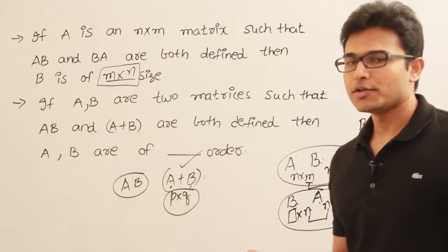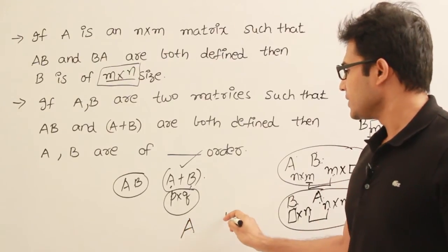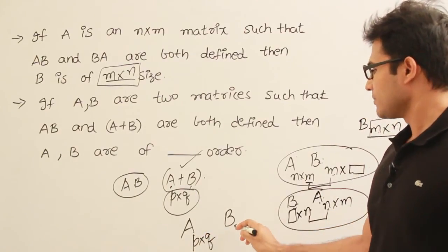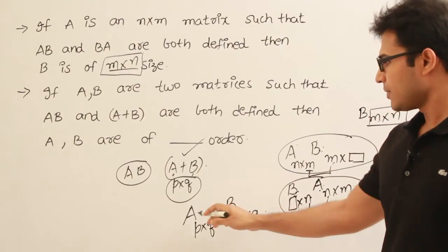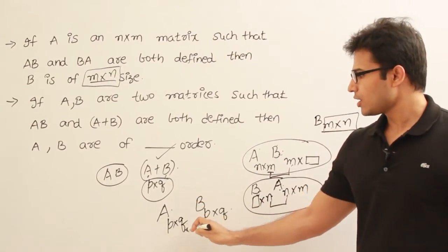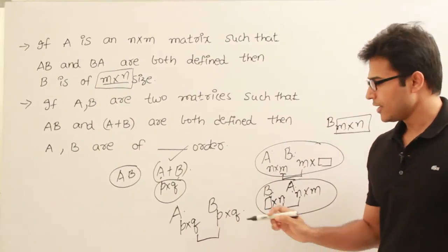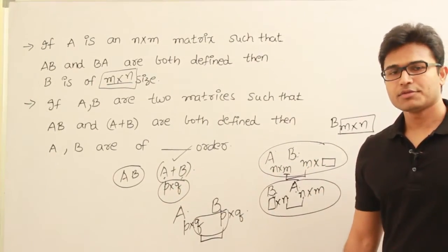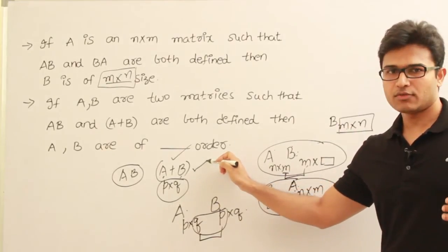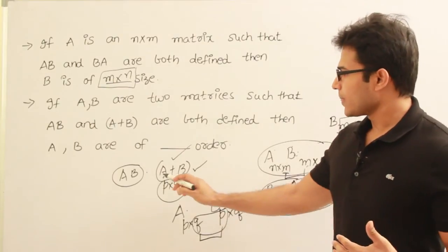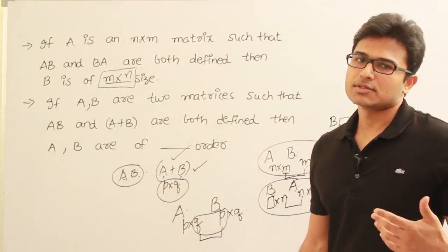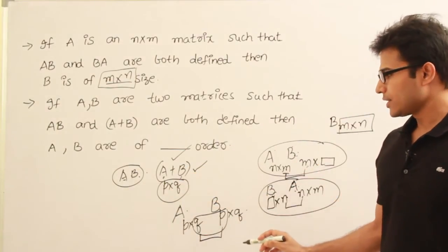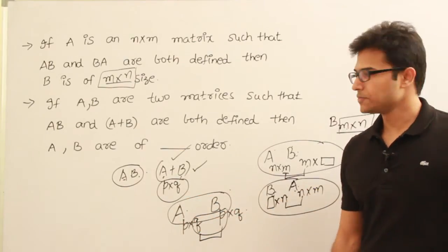Since AB is also possible, and A is of size P by Q and B is of size P by Q, they are multiplication-conformable only when the number of columns in A equals the number of rows in B. That means only when P equals Q. Therefore both are of size P by Q — that is, square matrices in which the number of rows equals the number of columns.